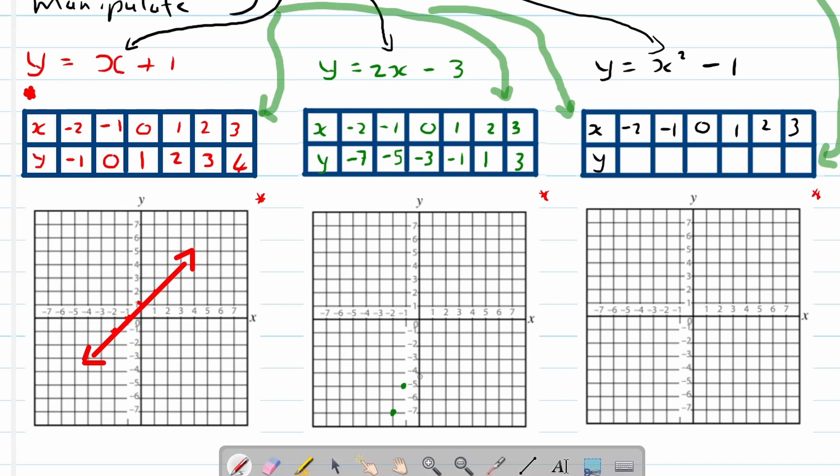x negative 1, y negative 5, right over here. x 0, y negative 3. x 1, y negative 1. x 2, y 1, and x 3, y 3. You can see over here it forms a nice beautiful straight line with a nice steep gradient. You can see it increases dramatically like double the amount than the red graph.